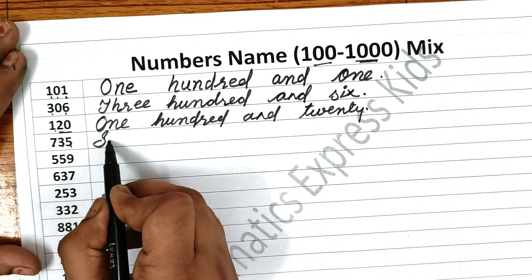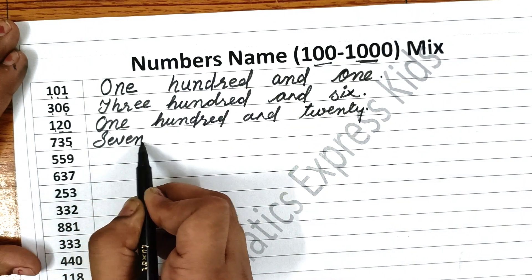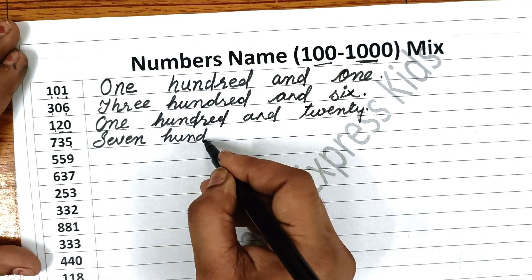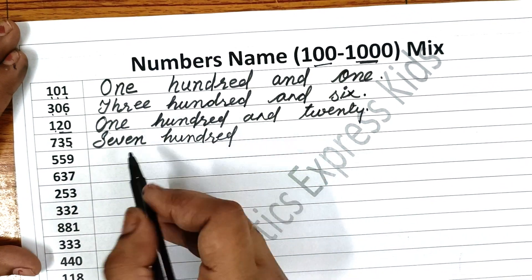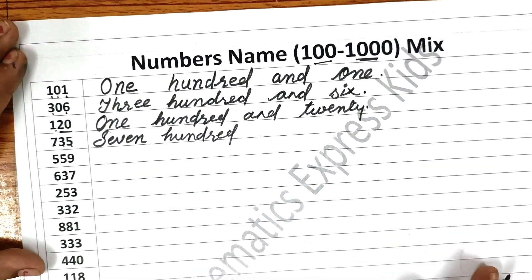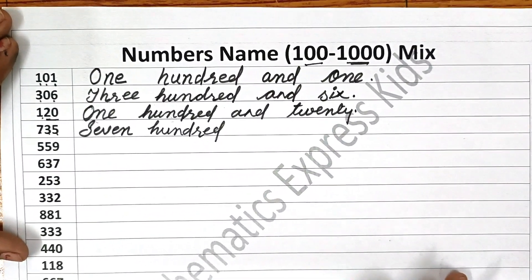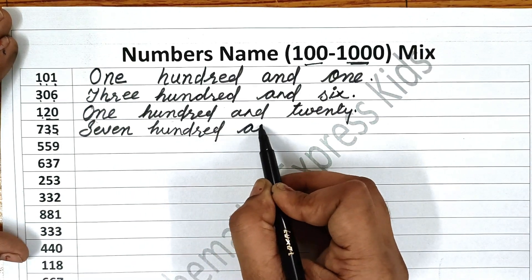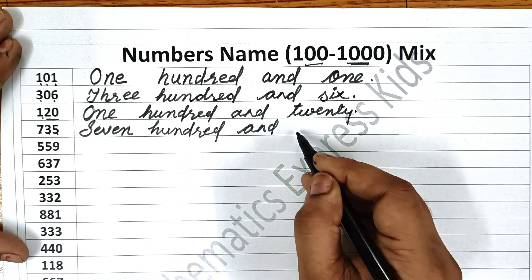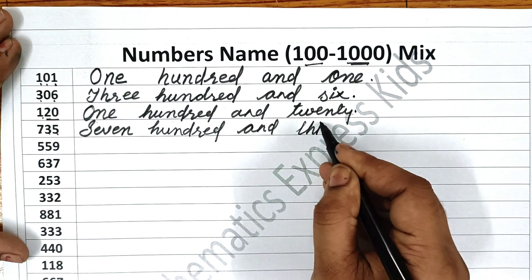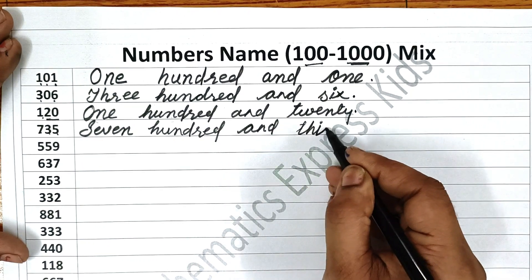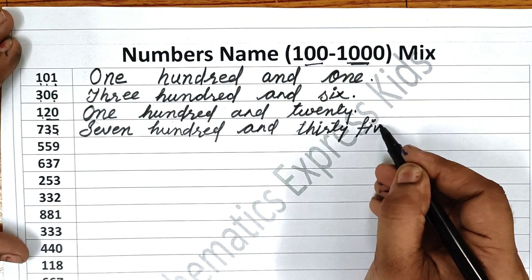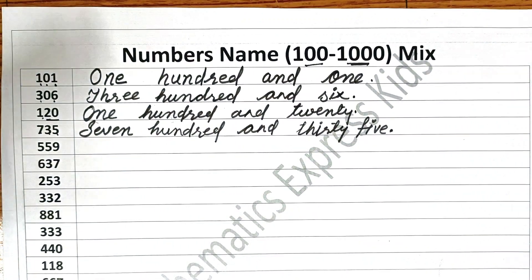Now the next one is 745. First write seven — S-E-V-E-N — seven hundred — H-U-N-D-R-E-D — 700. And thirty — T-H-I-R-T-Y — then five — F-I-V-E.